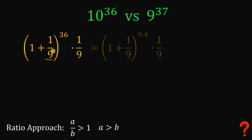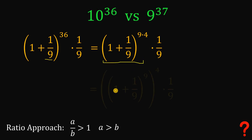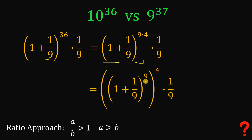What we're going to do is factor out 36 as 9 times 4. Using the laws of exponents, we can rewrite this expression as 1 plus 1 over 9, raised to the power of 9, then raised to the power of 4 — which is the same as 1 plus 1 over 9 raised to the power of 9 times 4.